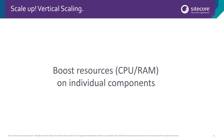Vertical scaling, or scaling up, allows you to add additional resources such as CPU and RAM to applications within your topology. This allows the individual components to handle more visits, cache more data, or execute more parallel streams.